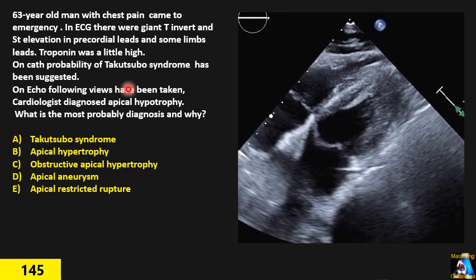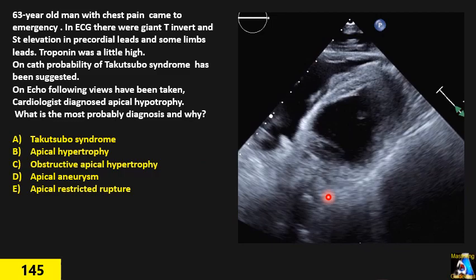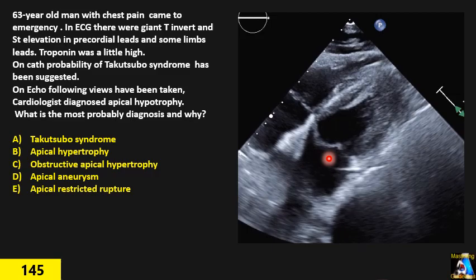In the cath lab, the cardiologist gave a probability of Takotsubo syndrome or apical ballooning. The patient was sent to the ICU — stable, but not too much. We then performed an echo, and based on the echo findings, this is an off-axis apical view that I obtained for this patient.